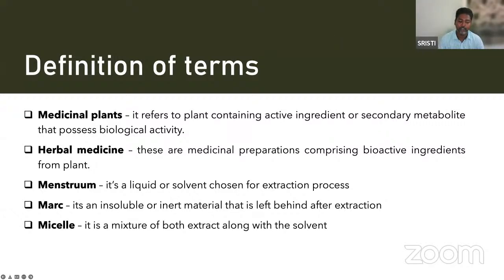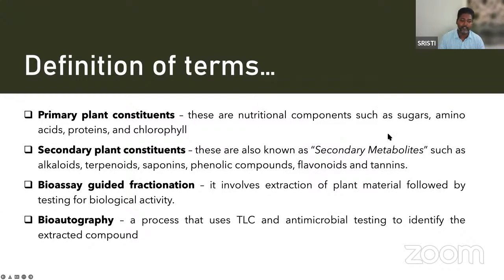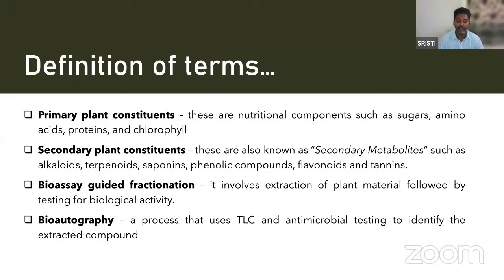Micelle is a mixture of extract along with the solvent. Primary plant constituents are components such as sugars, amino acids, proteins, and chlorophyll. Secondary plant components, also known as secondary metabolites, include alkaloids, terpenoids, saponins, phenolic compounds, flavonoids, and tannins. Bioassay-guided fractionation involves extraction of plant material followed by testing for biological activity — in each fractionation step, the biological activity of each fraction must be confirmed.